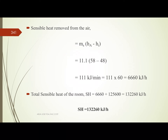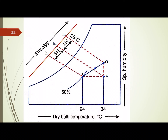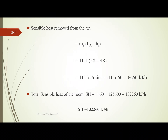The sensible heat removed from the air is calculated using the formula: sensible heat equals MS multiplied by (H_A minus H_I). The air enters at condition O and leaves at condition A. Latent heat is represented by H_O minus H_A.